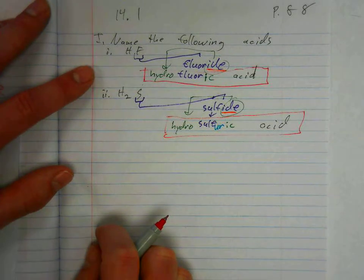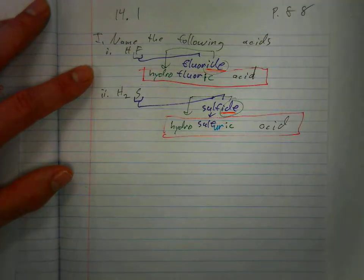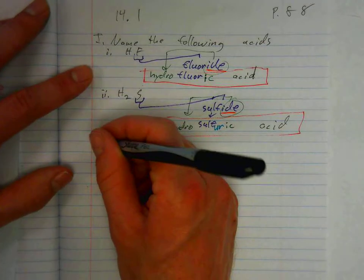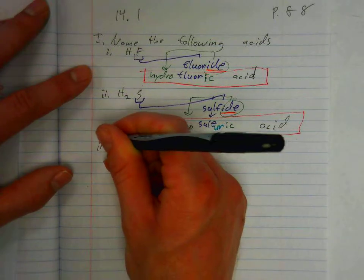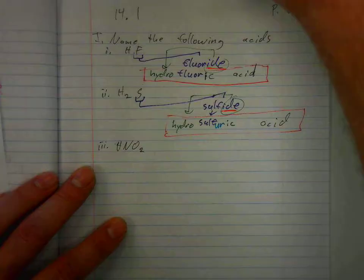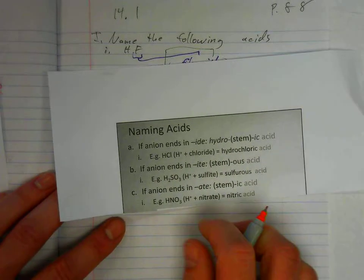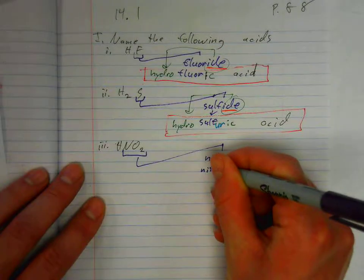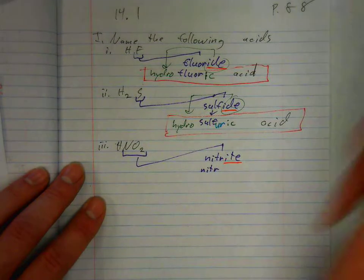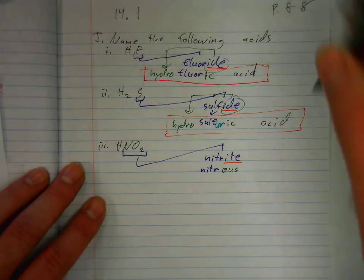Next one. In this case, it's an ITE anion. So we follow the rule: stem followed by OUS and the word acid.